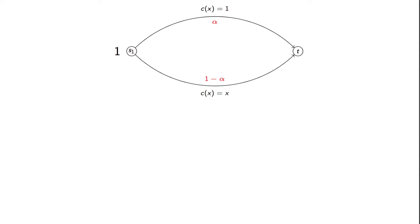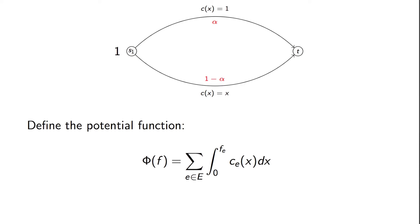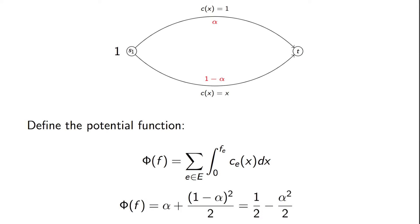Here's Pigou's example once again. And if we define a potential function to be given by this expression — you sum over all the edges and take the integral of the latencies — for this particular game, our potential function is given here.